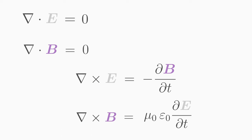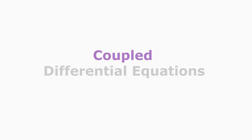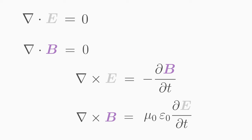The Maxwell equations are coupled differential equations, meaning the unknowns E and B appear together in one equation — namely in the third and fourth Maxwell equation.